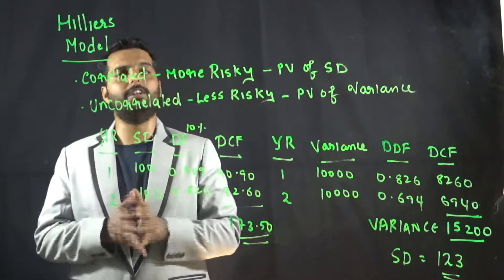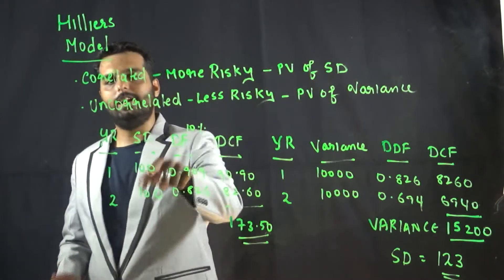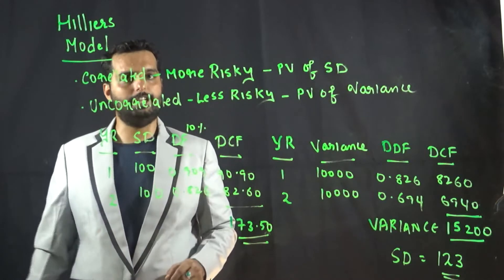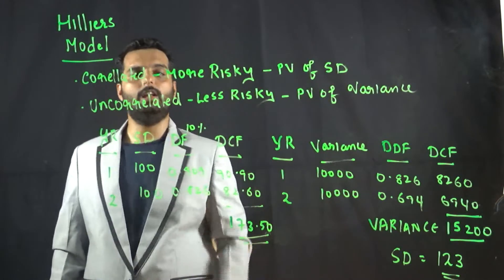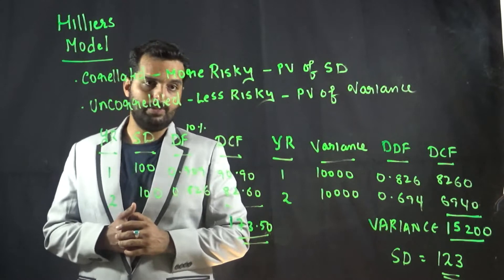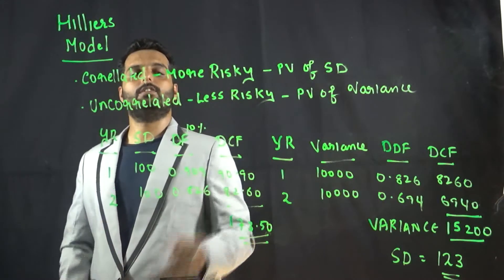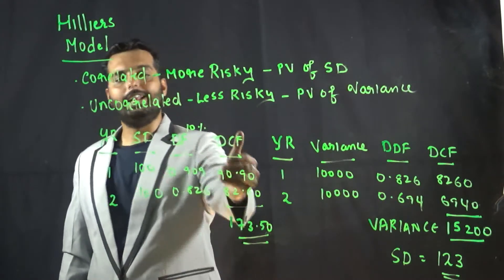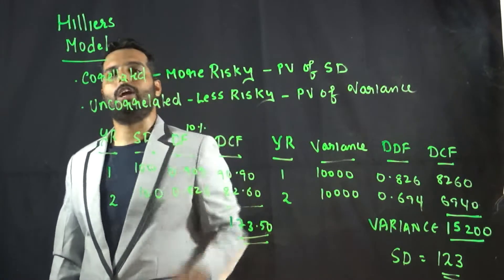So 100, 100. Assume the discount factor is 10 percent. It will be 0.909 and 0.826. So with the discount factor, it turns out to be 90.9, 82.6, and the overall present value of standard deviation will be 173 approximately.